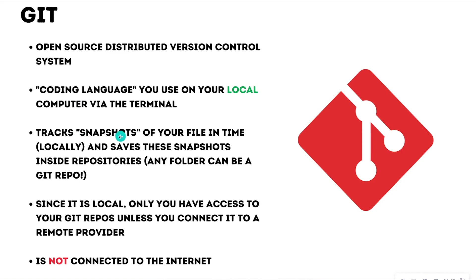Git is going to track snapshots of your file in time locally, and save those snapshots so you can go back to any of them anytime you want. These snapshots are saved in what we call repositories. So if you have a folder on your computer called Final Paper with all of your rough drafts inside, you can turn that folder into an actual Git repository and let Git track your versions for you.